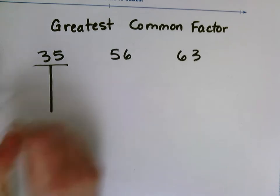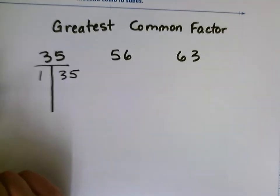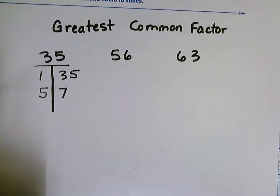So my factors of 35 are 1 and 35. And I know the other factor pair is 5 and 7. And those are all the factors for 35.